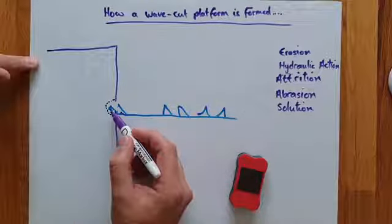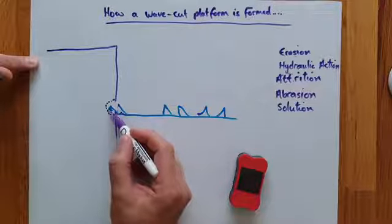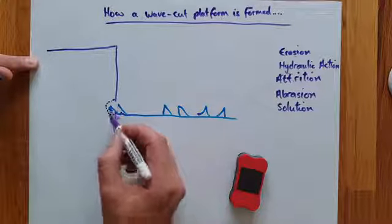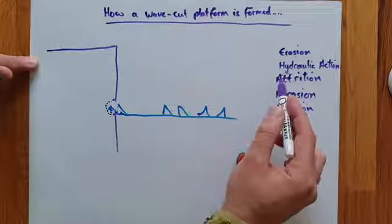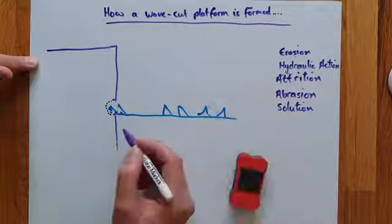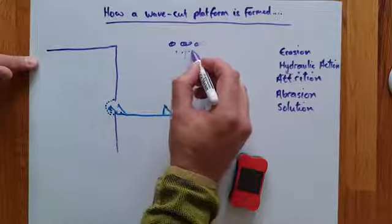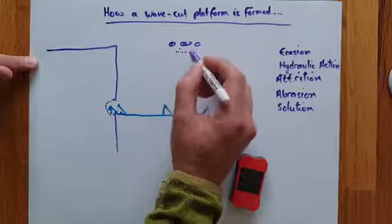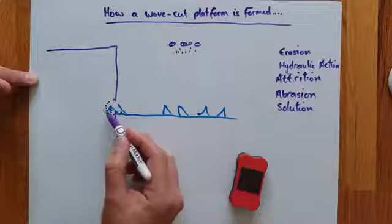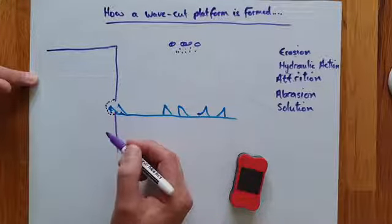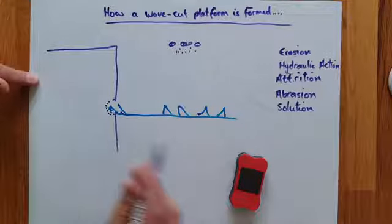But also you'll find rocks off the cliff face that's collapsed inside there that the waves are bounding around, bashing and knocking against each other. And these rocks are called attrition. And they get worn down into sand and shale and gravel and grit. And that inside there works as abrasion like sandpaper. So it acts like sandpaper rubbing against the rock, so it speeds up the process.